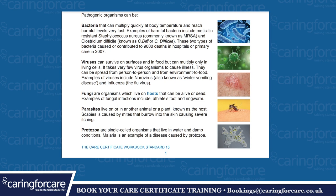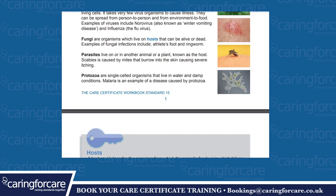Examples of viruses include winter vomiting and influenza or the flu virus. Fungi are organisms which live on hosts — they can be alive or dead. Examples of fungal infections include athlete's foot and ringworm. Parasites live on or in an animal or plant, known as a host. Scabies is caused by mites that burrow into the skin causing severe itching. Protozoa are single-celled organisms that live in water and damp conditions — for example, malaria.